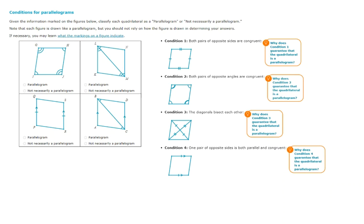And then we're given these four figures and asked to determine if it's a parallelogram or maybe not, maybe not necessarily. So what we want to look for is, are any of these four conditions met by the markings in our figure?